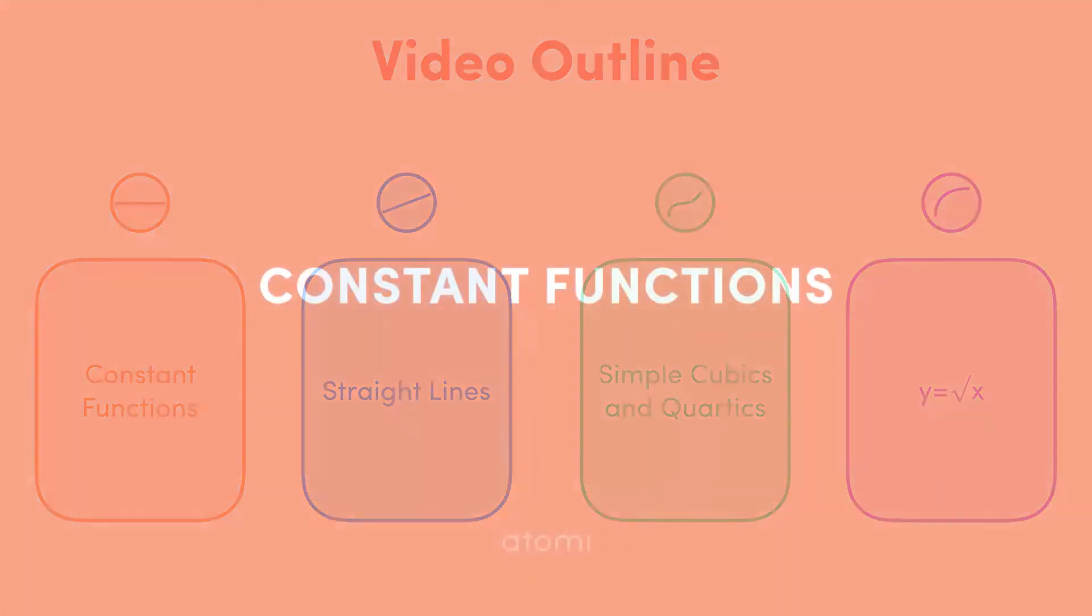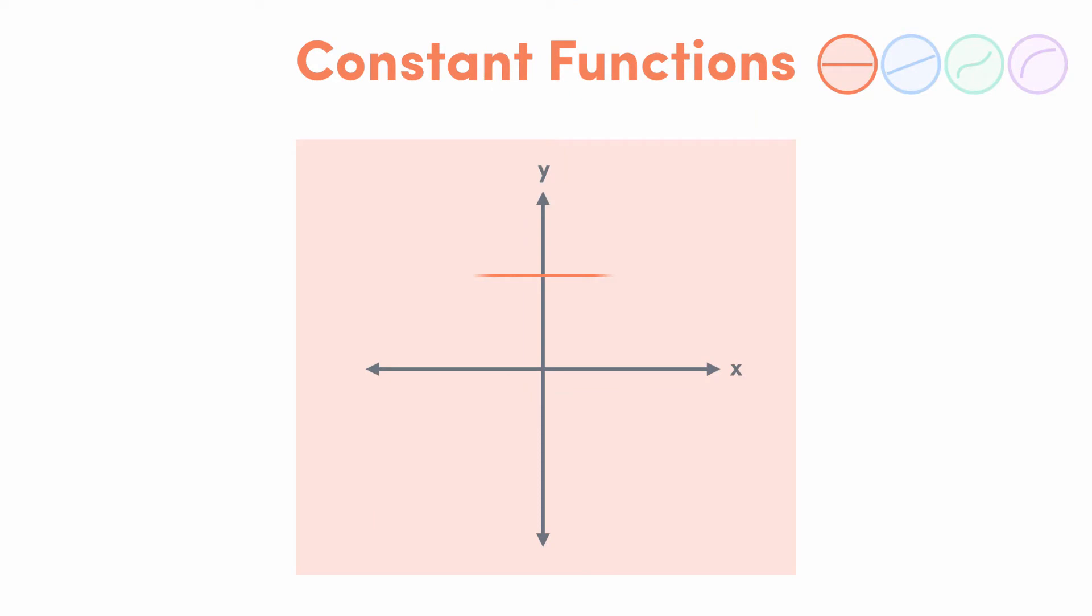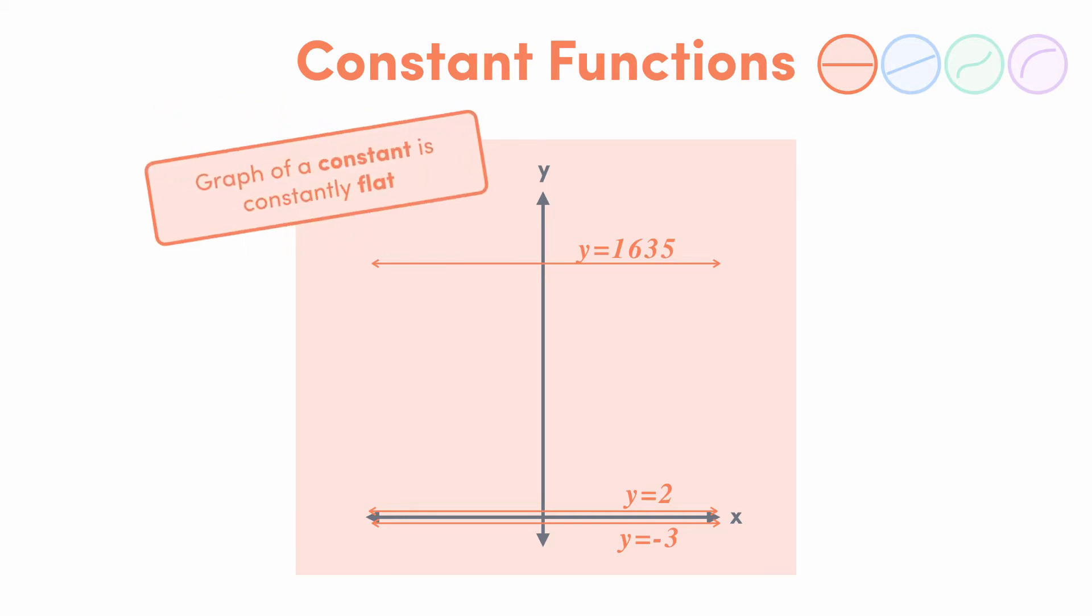So graphs of a constant function. That's like y equals 2 or y equals negative 3, or y equals 1635. Whatever number it is, y takes that value no matter what x is. So it's going to be a horizontal straight line. A graph of a constant is constantly flat. We can also think of this as sketching the graph of y equals f of x, where f of x equals some number. Let's say 2. It's a function that takes in any value of x, and always spits out the same value of f of x.